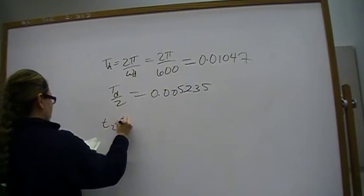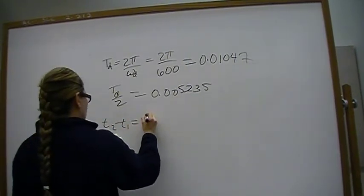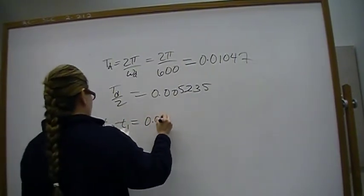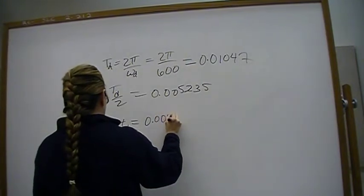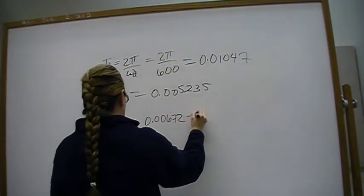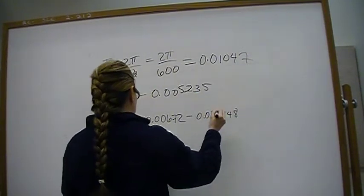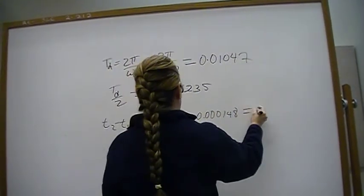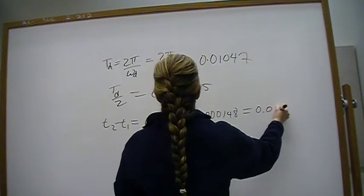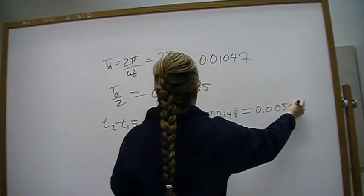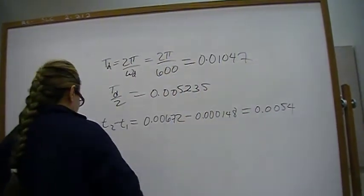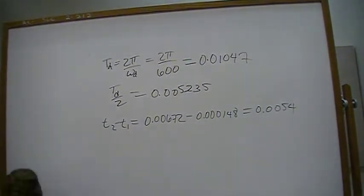And t2 minus t1 is 0.00672 minus 0.000148. And that works out to be 0.00554. It's going to work out to be equal. So we'll prove that part.